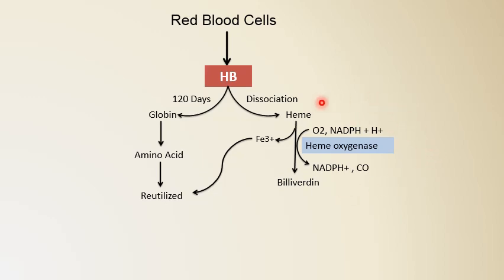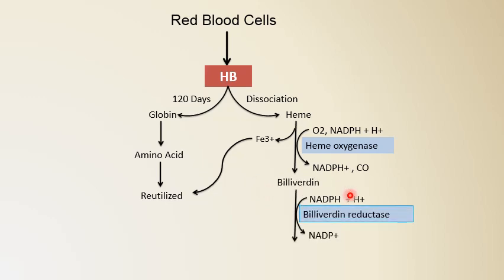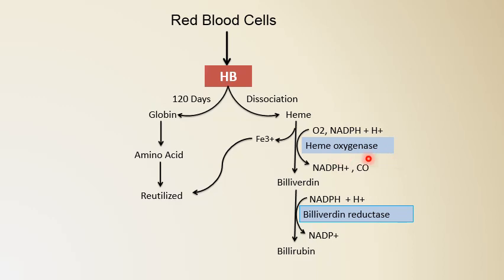Biliverdin, a green color pigment, is reduced with the help of another enzyme called biliverdin reductase, which also requires NADPH. Biliverdin is converted into the yellow color pigment bilirubin. Bilirubin is synthesized from heme with the help of two enzymes: heme oxygenase and biliverdin reductase. The rate-limiting enzyme for heme catabolism is heme oxygenase.